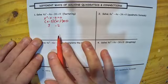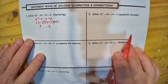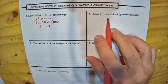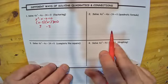That leaves us with our solutions of positive 3 and negative 2. Those are our two solutions. And the second problem, doing the same thing by the quadratic formula, we should end up with the same answers here.